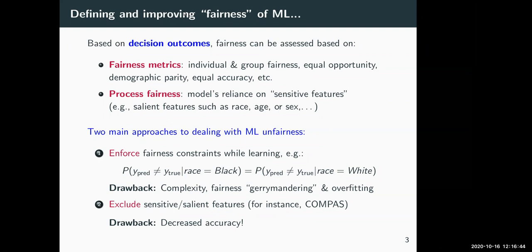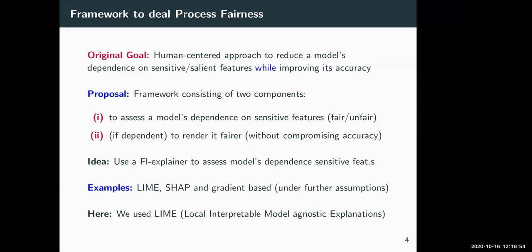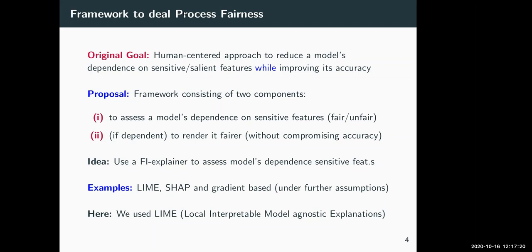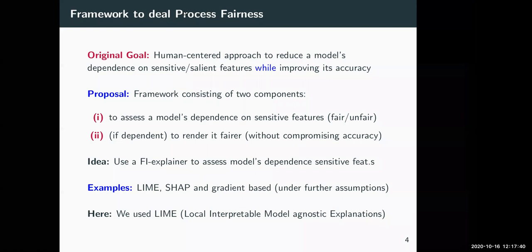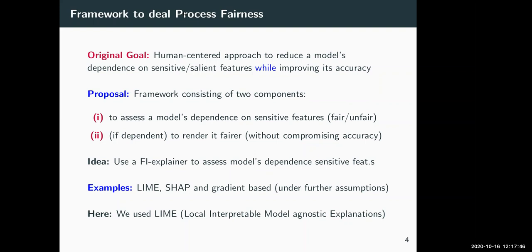Our original goal was to propose a human-centered approach to reduce a model's reliance on sensitive features. We propose a framework with two parts: first, assessing whether a model is fair by checking whether its outcomes depend strongly on sensitive features; and second, if the model is deemed unfair, proposing another model that resembles the original but is much fairer—without compromising accuracy.